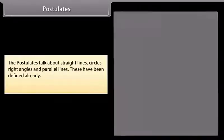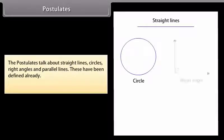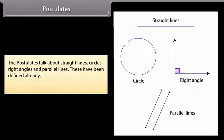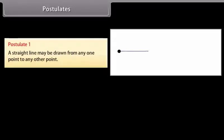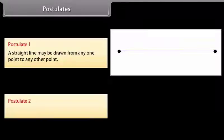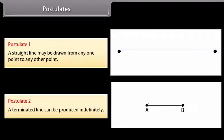Postulates. The postulates talk about straight lines, circles, right angles, and parallel lines. These have been defined already. Euclid's postulates are 5 in number. First postulate is: A straight line may be drawn from any one point to any other point. Postulate second is: A terminated line can be produced indefinitely.